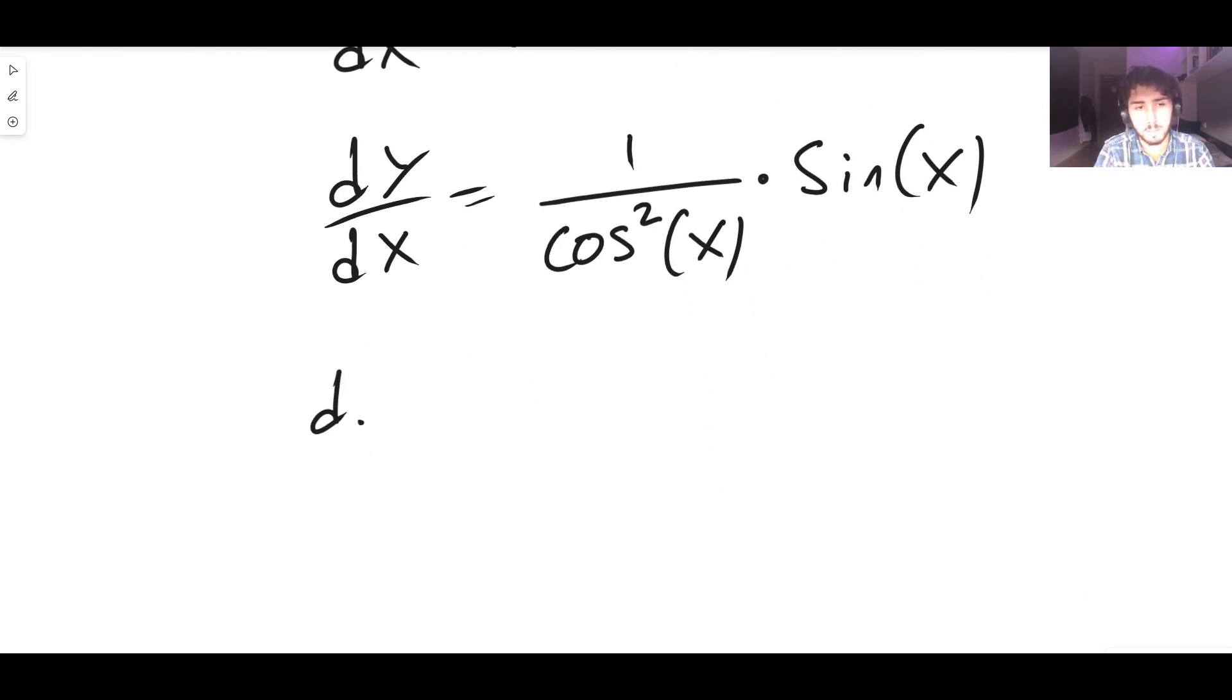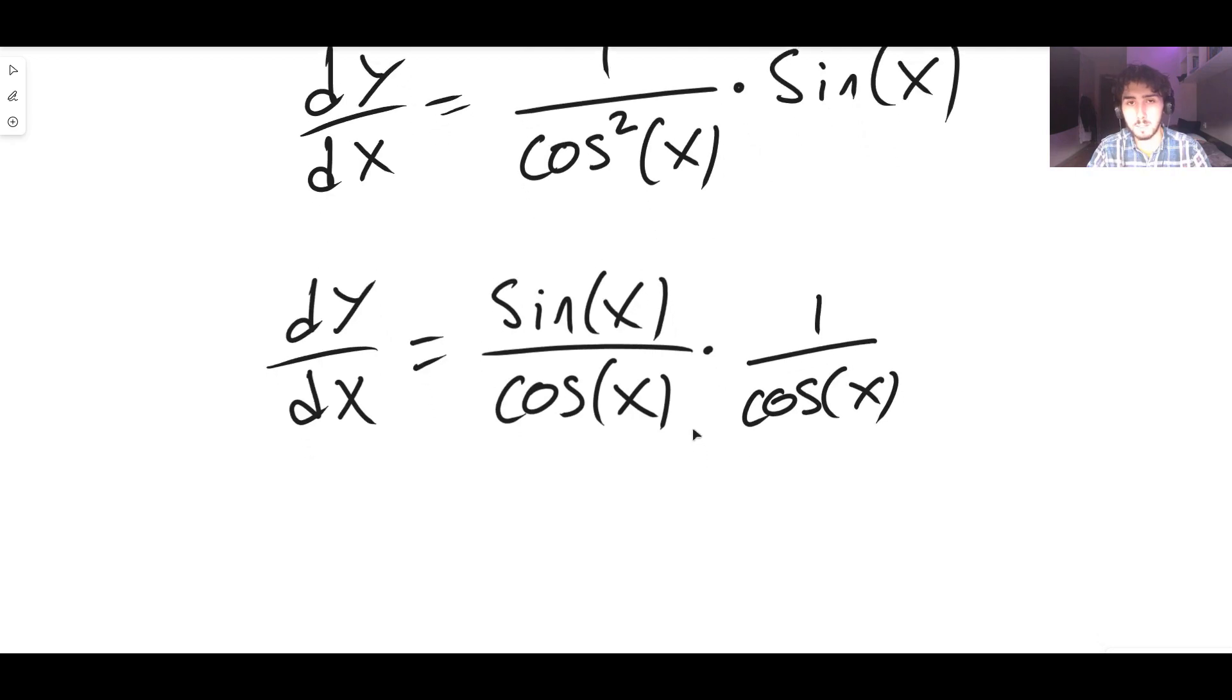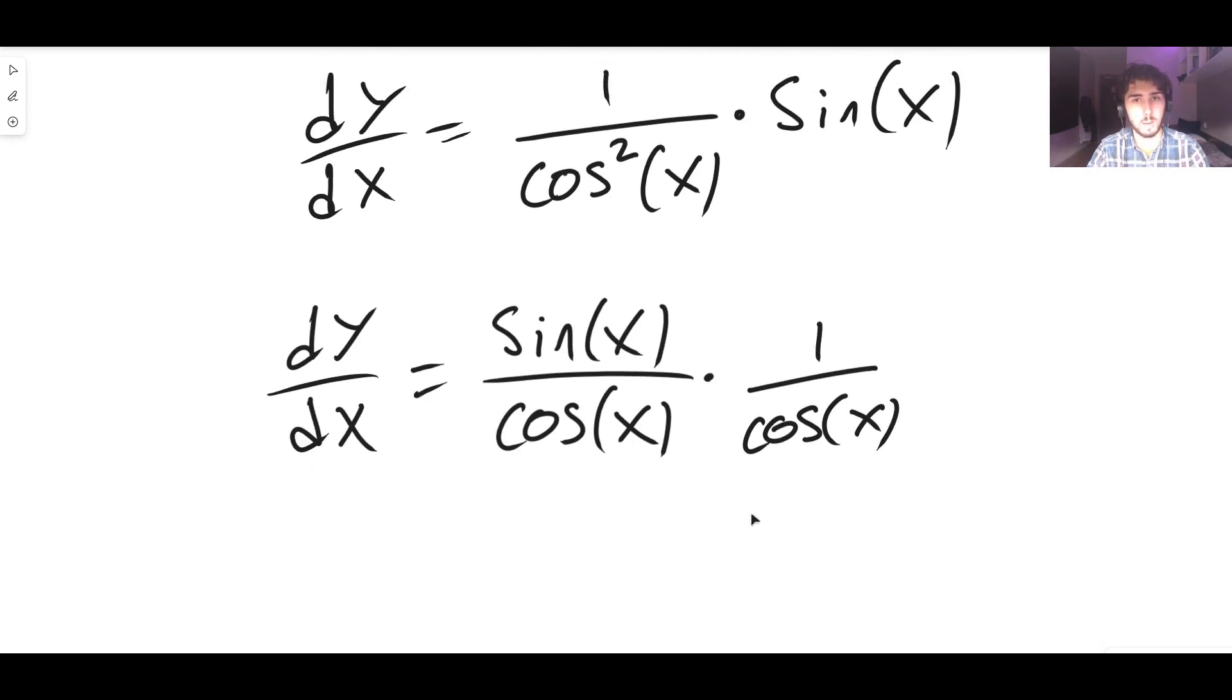We can keep simplifying. dy/dx is just well we have a sin x here and I'm going to put this all over cos squared but I'm actually going to put it over just cos and then multiply it by one over cos. Sine x over cos squared is just sine x over cos times one over cos.